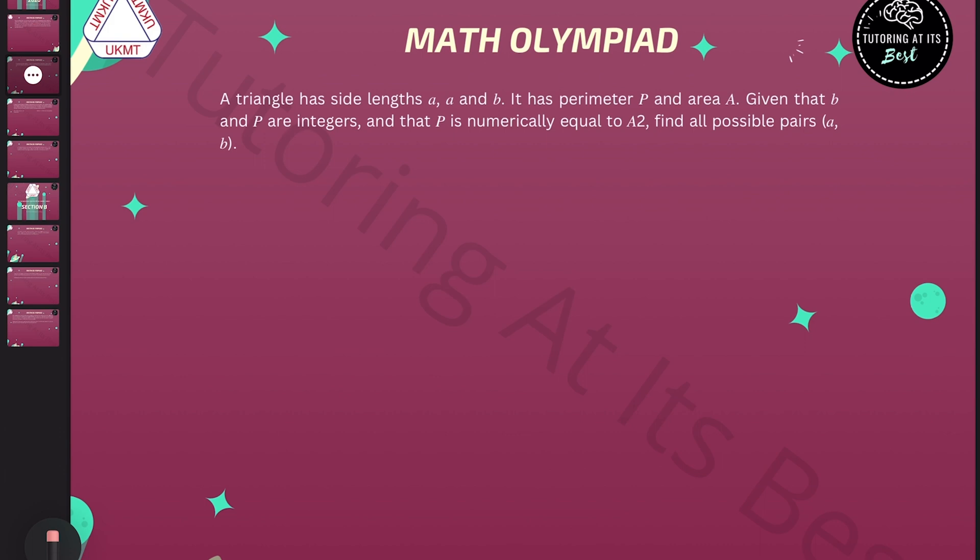A triangle has side lengths A, A and B. It has perimeter P and area A. Given that B and P are integers, and that P is numerically equal to A², find all possible pairs A, B.